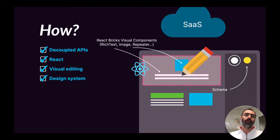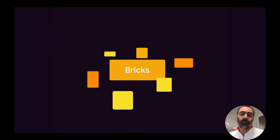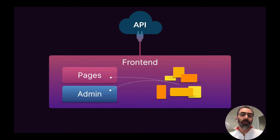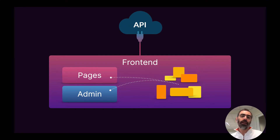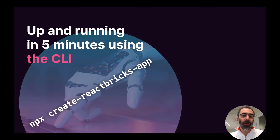So now both Kate and John are happy. We have this concept of visually editable content blocks that we call bricks. Bricks need to be shared between the admin interface and the frontend — what you see in admin must match what you get on the frontend. The trick is to put the admin interface inside the frontend project, so in your Next.js or Gatsby project you'll have a /admin folder where the admin interface lives. Bricks are imported by both the pages and the admin interface. You can get up and running in five minutes using our CLI with npx create-reactbricks-app.